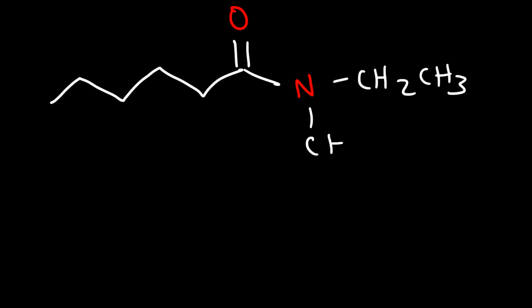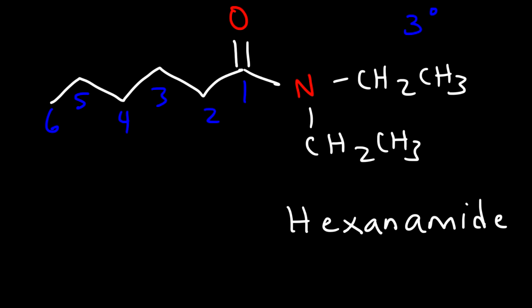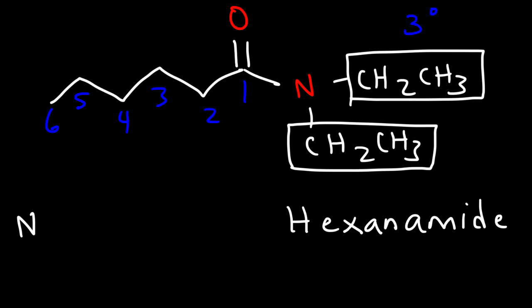In this example we have a tertiary amide — the nitrogen atom is attached to three carbon atoms. Let's count the longest chain: it's a six-carbon chain, so instead of saying hexane we're going to replace the E with amide, giving us hexanamide. We have two ethyl groups on the nitrogen atom, so it's going to be N,N-diethylhexanamide.